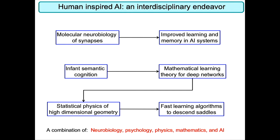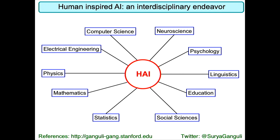To summarize the nature of this interdisciplinary work: we started with the molecular neurobiology of synapses, which led to improved learning and memory in AI systems. We also started with infant semantic cognition, which led to a mathematical theory of deep learning dynamics, which in turn led us to think about the statistical physics of the geometry of high-dimensional spaces, leading to faster algorithms to descend saddles. This involves a synthesis of neurobiology, psychology, physics, mathematics, and AI. More generally, in our quest to understand the most complex structure in our known universe — the human brain — and to improve upon it, we'll have to unite many disciplines. HAI stands poised to catalyze this unification as it moves forward along its intertwined quest to both understand biological intelligence and create artificial intelligence.